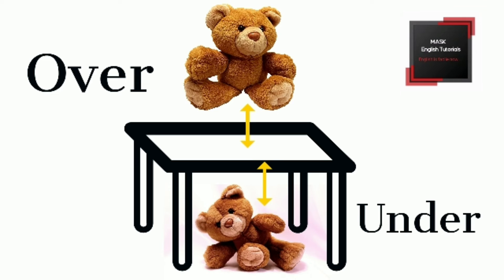Seventh, 'over' means to stay immediately up after an object or person. Eighth, 'under' means to stay immediately below an object or person. Example: my sister's study is under the table.